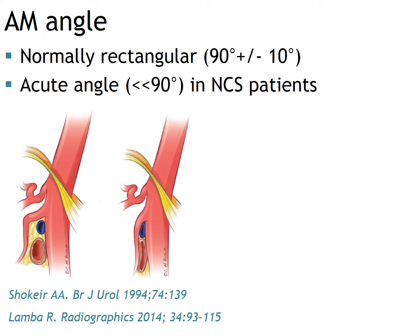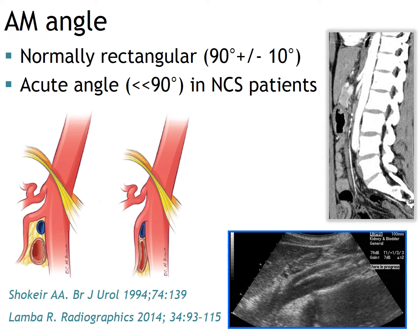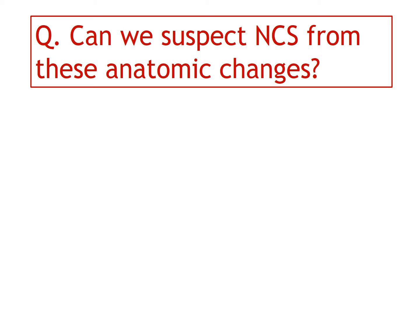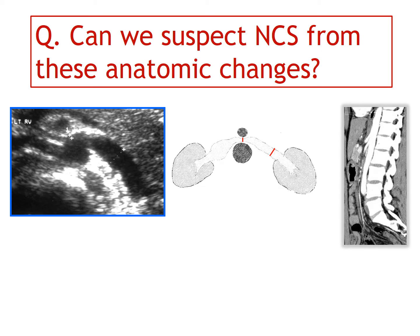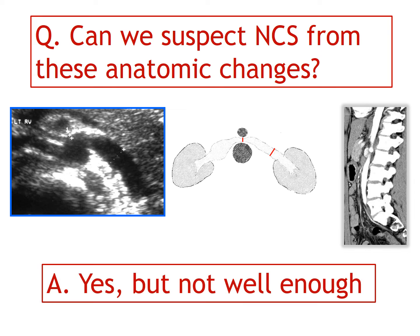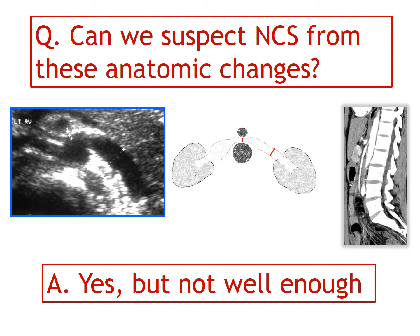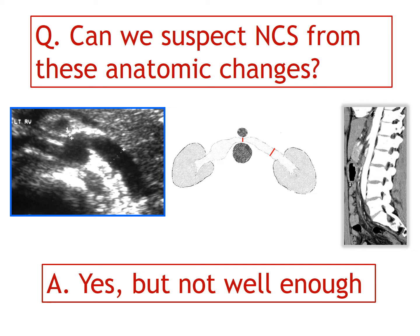The angle between the aorta and superior mesenteric artery, the so-called aorto-mesenteric angle, is another anatomic parameter measurable at ultrasound or CT. According to reports, this angle is almost 90 degrees in normal but much narrower in nutcracker patients. But again, this parameter is difficult to use because of too much overlap. So the answer is: yes, we can suspect nutcracker syndrome from these anatomic changes — such as left renal vein diameter or aorto-mesenteric angle — but not well enough due to big overlap between patient and normal control groups.